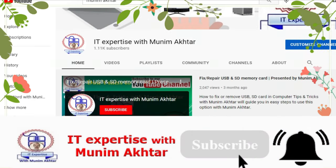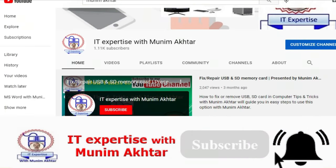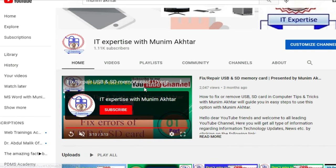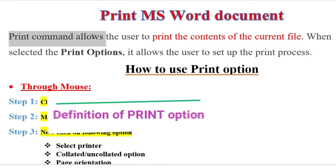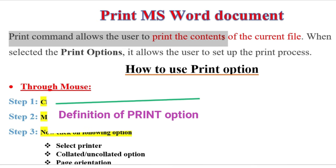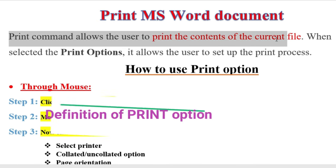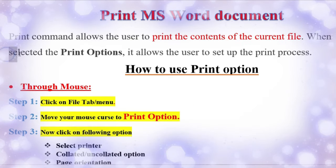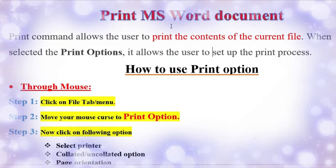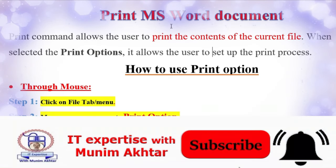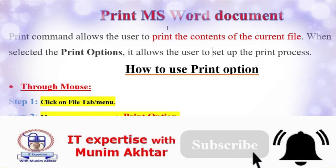Let's discuss what are print options and how to use the print options. The print command allows the user to print the contents of files. When selected, the print options allow the user to set up the print process, including settings for the soft copy. A few settings must be adopted for that.